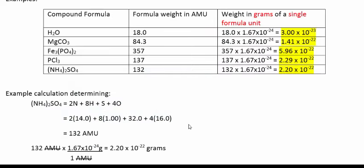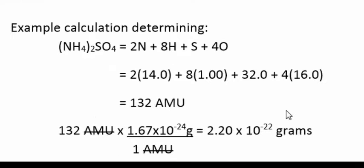So down here, below the calculation of the AMU, I just show the setup of how to determine the actual gram amount of a single molecule or formula unit. Multiply the AMU number by 1.67 times 10 to the minus 24th grams per AMU. And if you think of dimensional analysis, which is the way it's set up in that model, the unit of AMU cancels and you're left with the unit of grams.